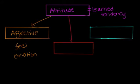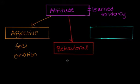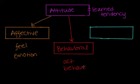The second component is called the behavioral component. The behavioral component is how we act or behave towards an object or a subject. So in this component, we may say something like, I will avoid spiders and scream if I see one. The words avoid and scream indicate an action or a behavior, and that's going to influence our attitude.